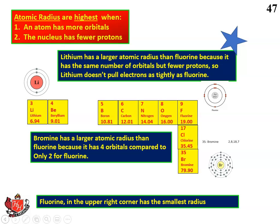We can also explain this using the effective Z number. The effective Z for lithium is three protons minus two core electrons, which equals one — so the outer electron in lithium only feels the pull of one proton. Whereas in fluorine, you have nine protons minus two core electrons, so nine minus two is seven. All the valence electrons in fluorine feel the pull of seven protons — that's a lot stronger. Therefore fluorine's electrons are pulled in tighter and it has a smaller atomic radius.